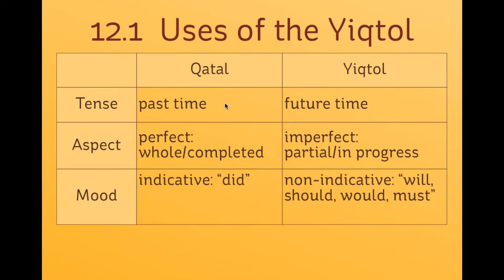Here's going to be the bigger picture: katal and yiktol form this dichotomy in the language — they form this fault line across tense, aspect, and mood, these three ways of describing a verbal action. Tense describes when an action occurred, aspect describes how that action is being viewed, and mood says whether the action happened or describes something in the realm of possibility.